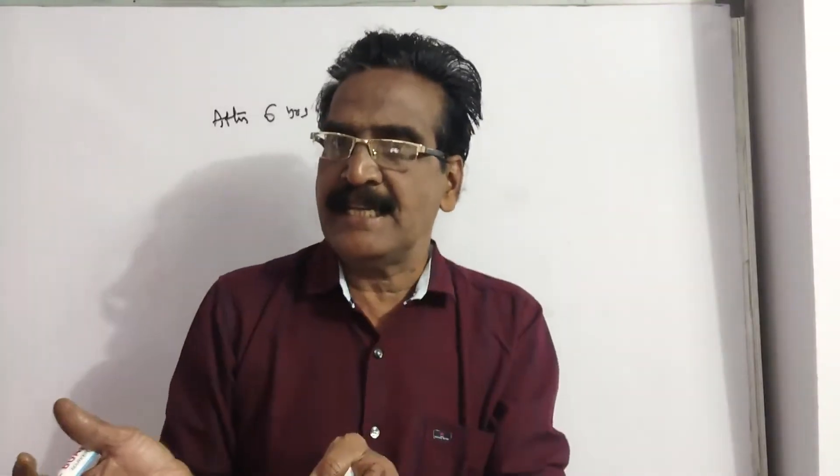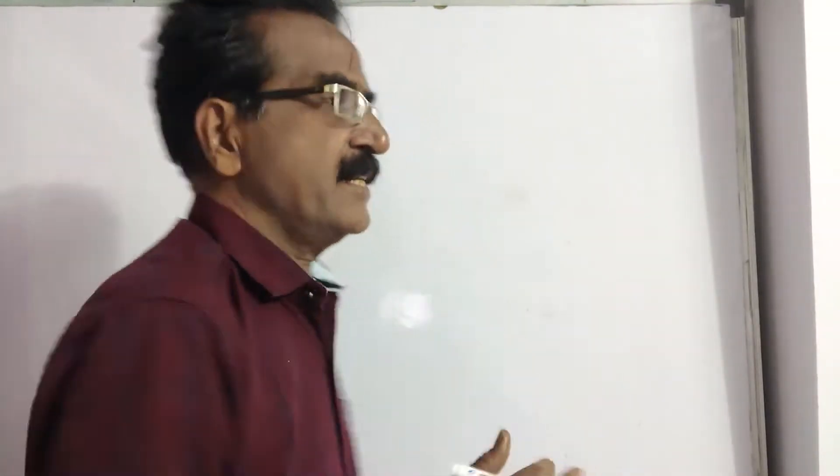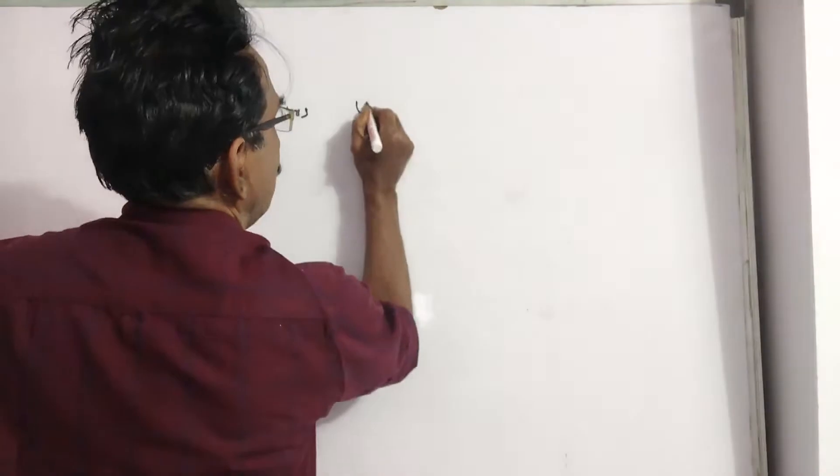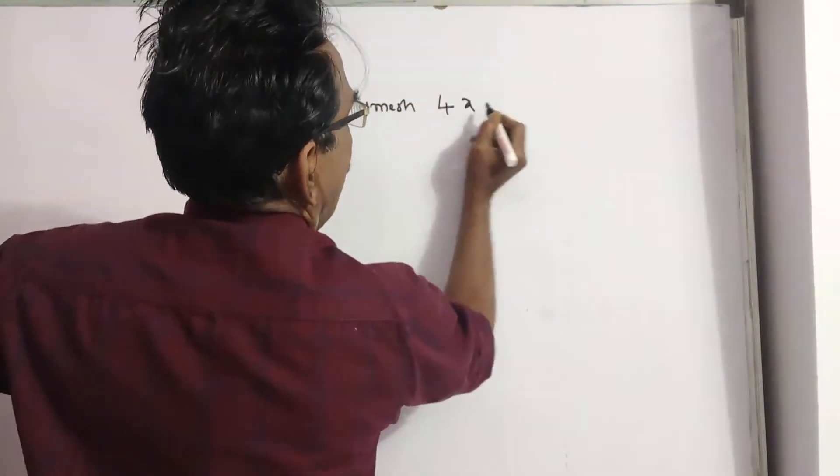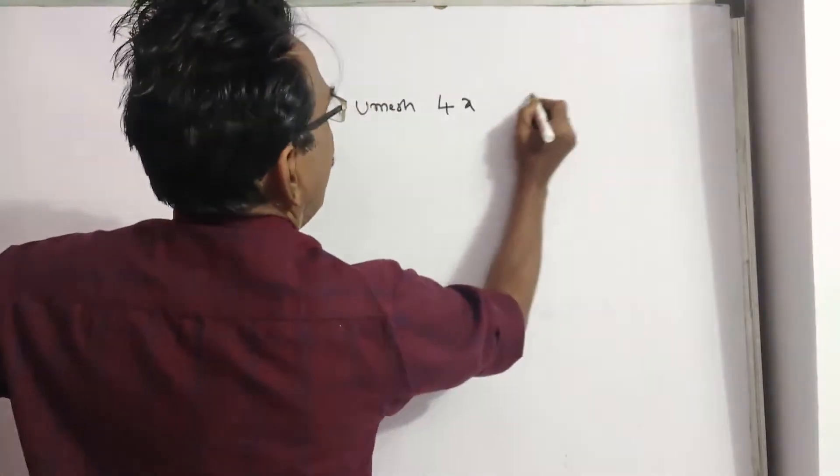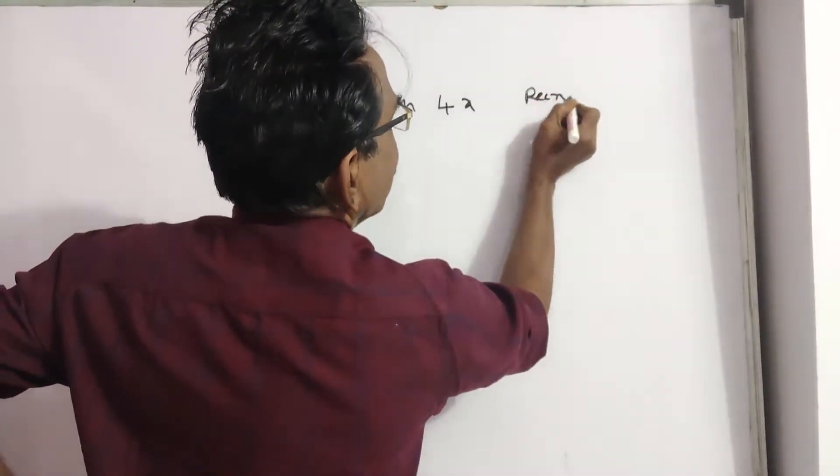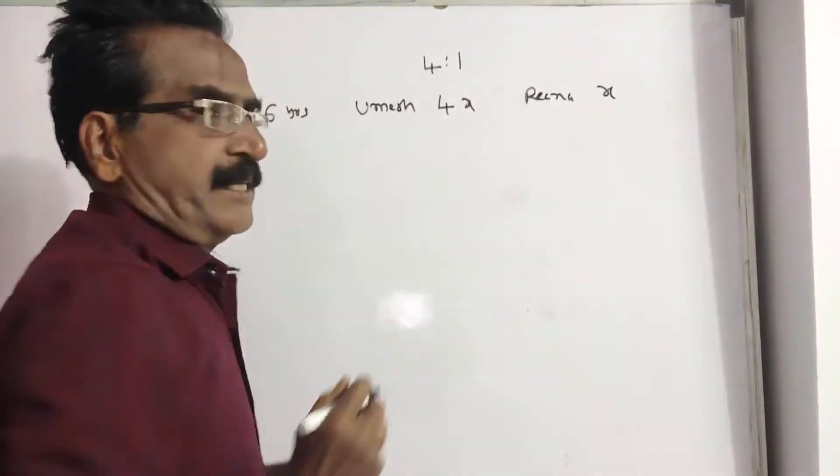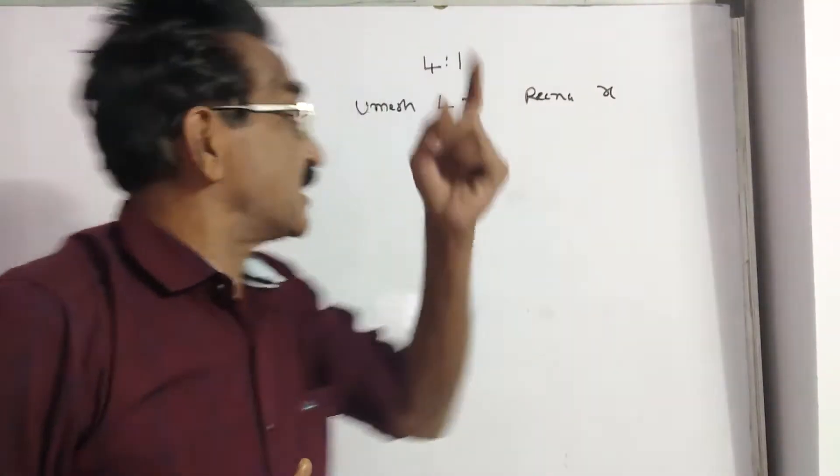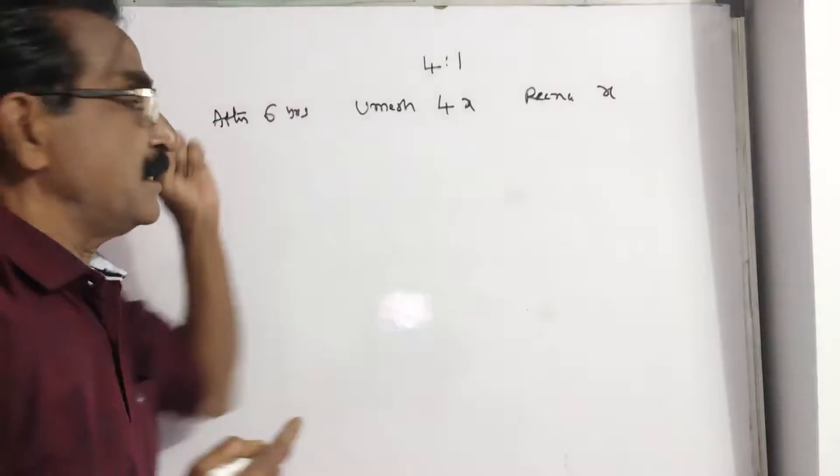That means Umesh is 4x, Rena is x. After 6 years, Umesh will be 4x and Rena will be x. The ratio of 4 is to 1. This is after 6 years.